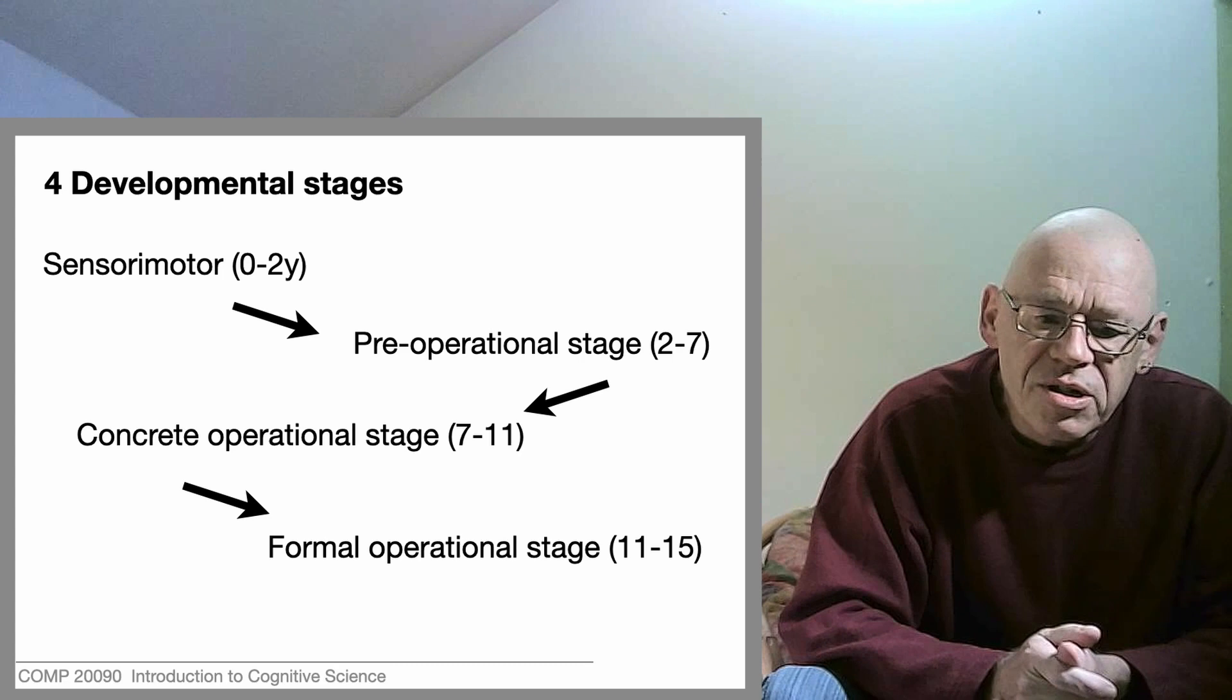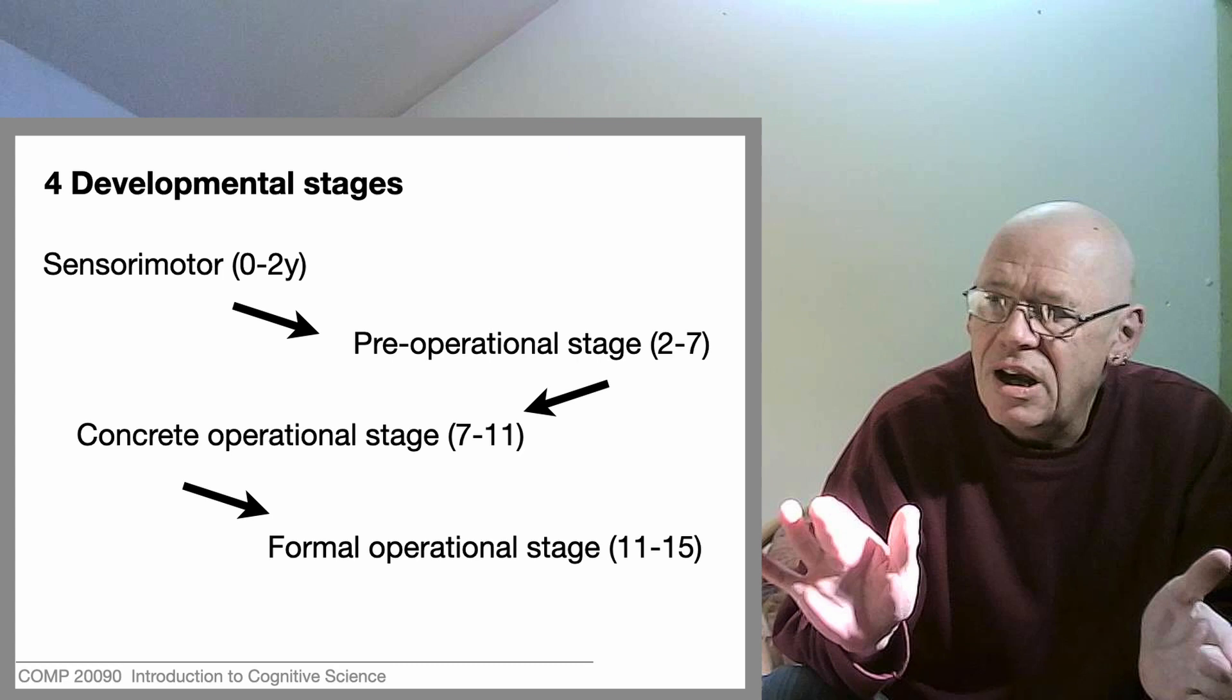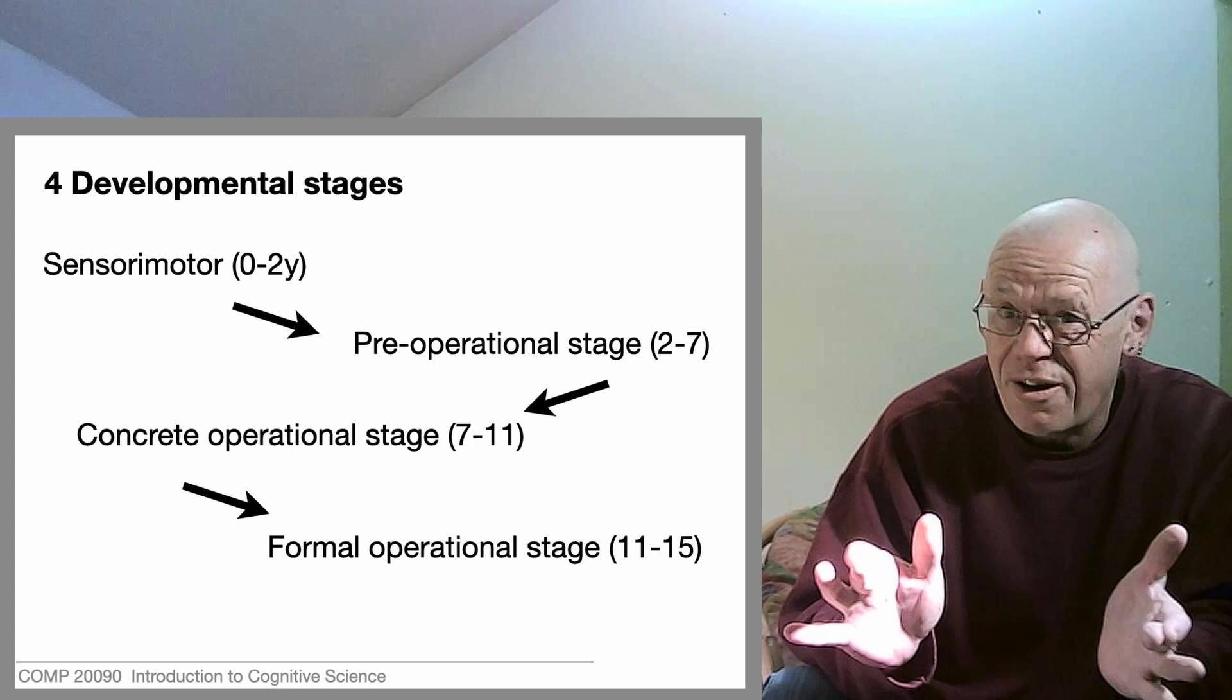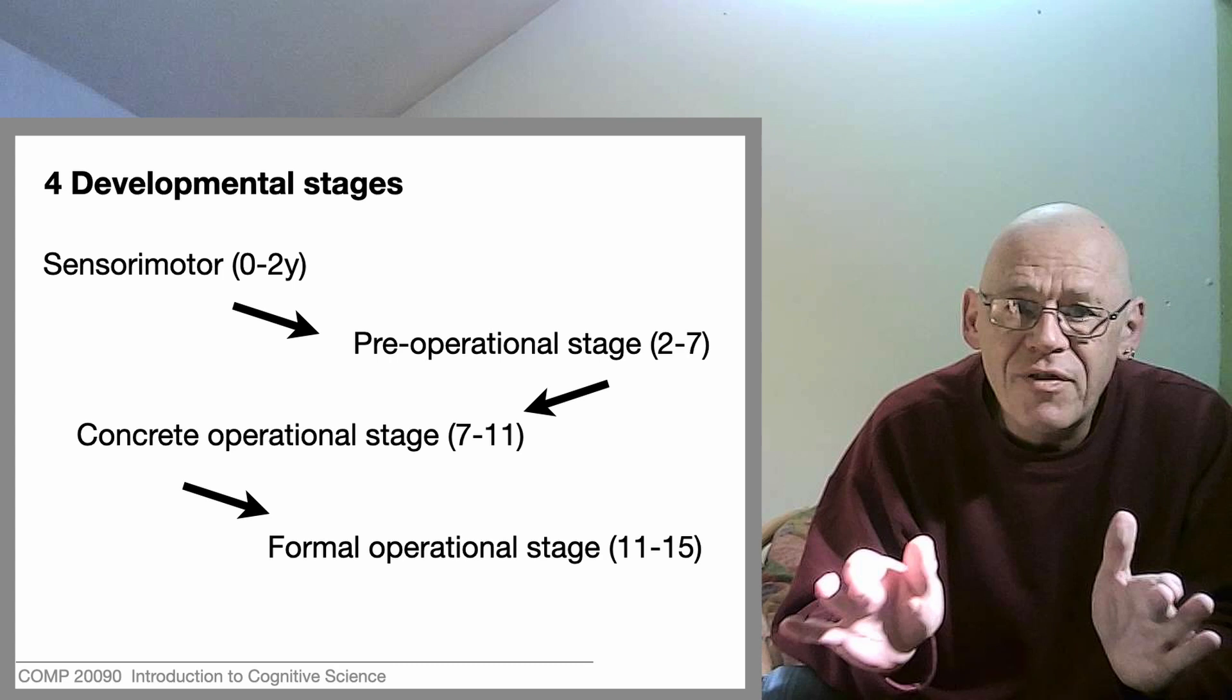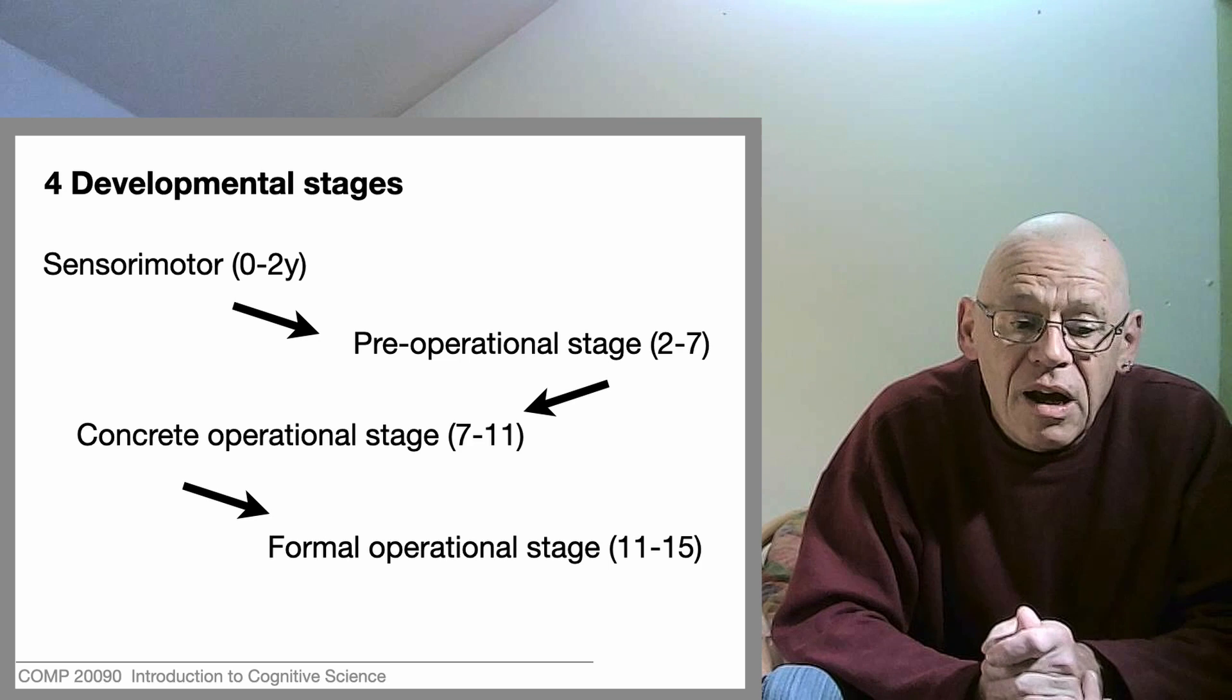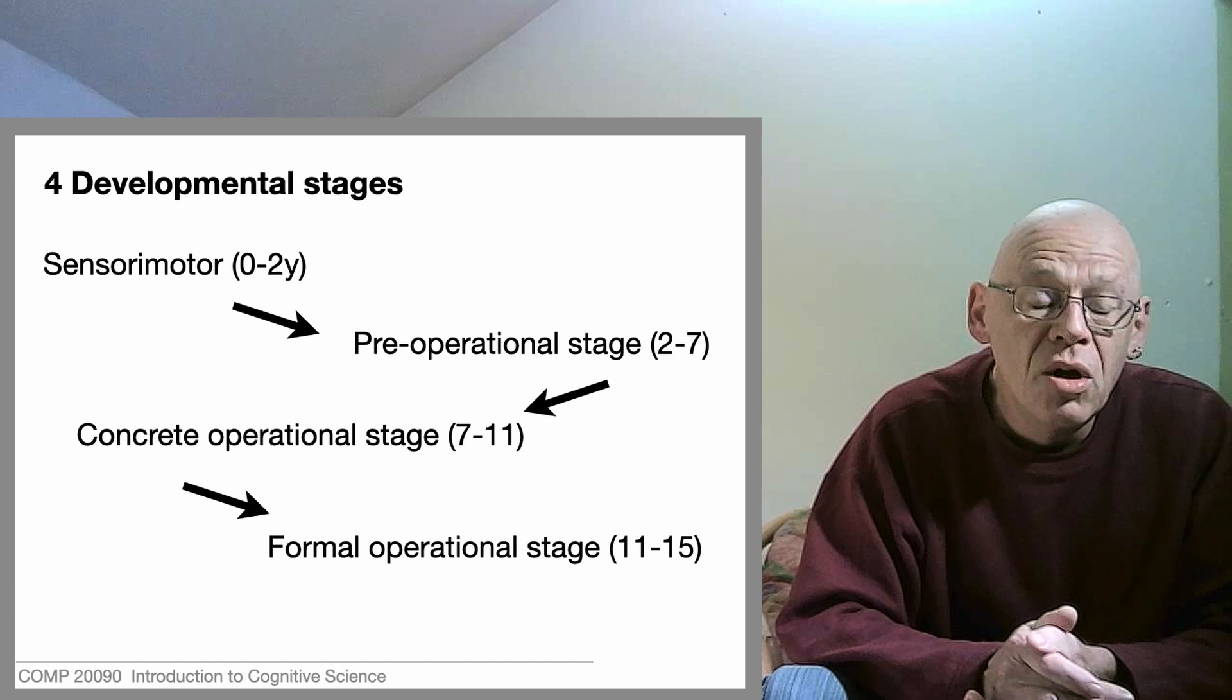The next stage he identifies he calls the pre-operational stage. From age two to age seven, this is like early days in primary school, when you might go to kindergarten and have your first kinds of lessons. The way you teach children at this stage is very different from the way you teach children at a later stage. Between seven and eleven, the latter half of primary school, he'll call it the concrete operational stage. Then the last developmental stage is the formal operational stage, which corresponds in our Irish educational system roughly to the transition from primary school to secondary school.